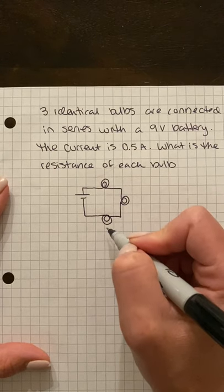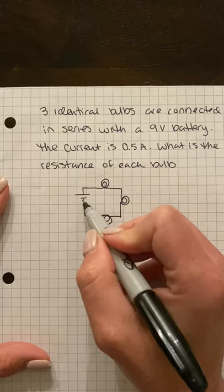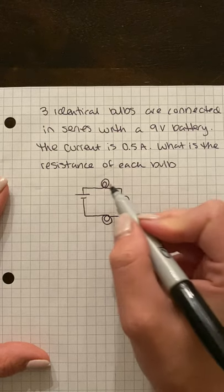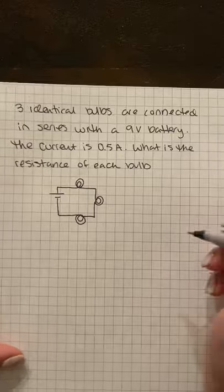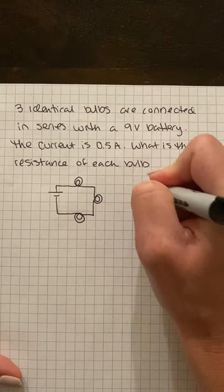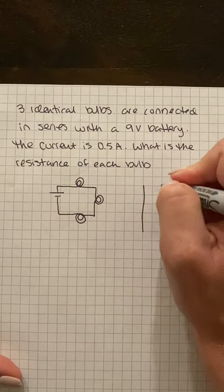At any rate, here's my series circuit. I have one path to follow, which makes this a series circuit. I have my three light bulbs and I have my battery, so I'm going to make a chart to keep all my information organized.